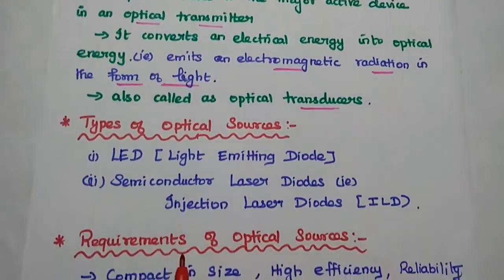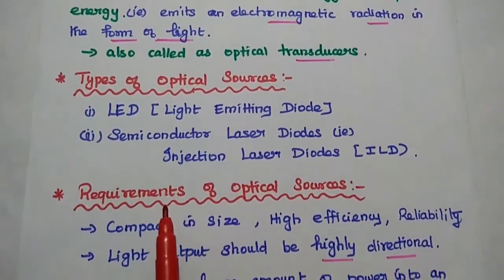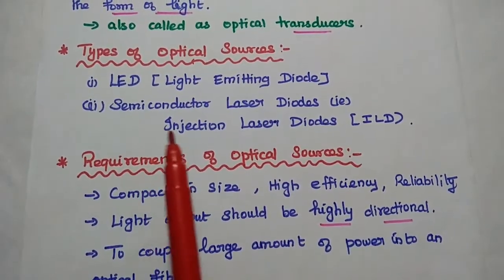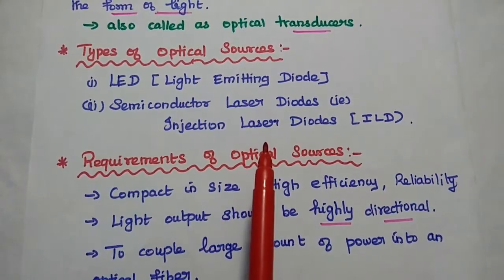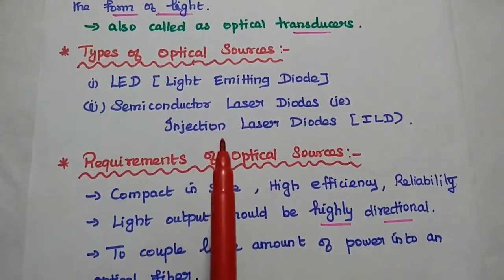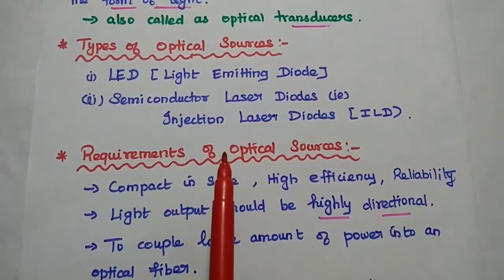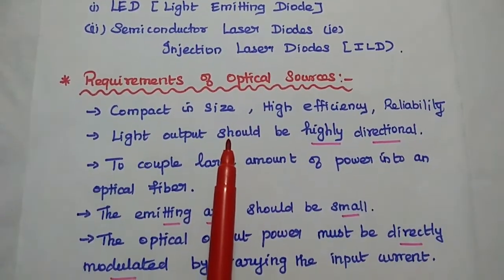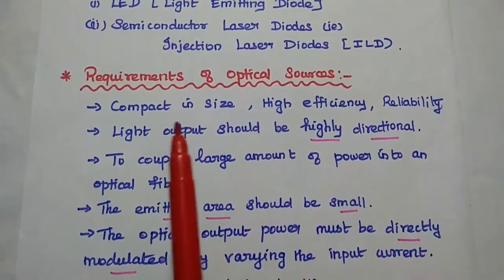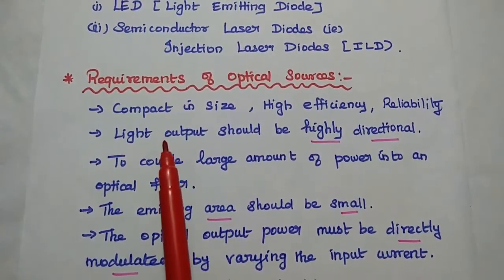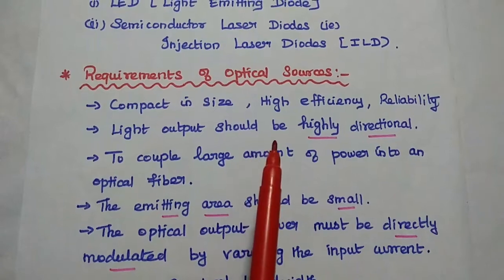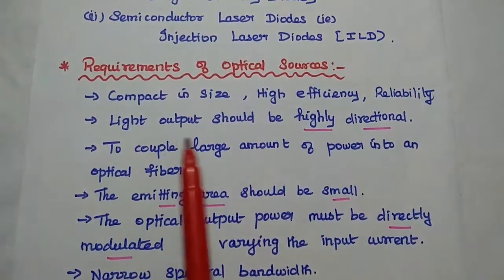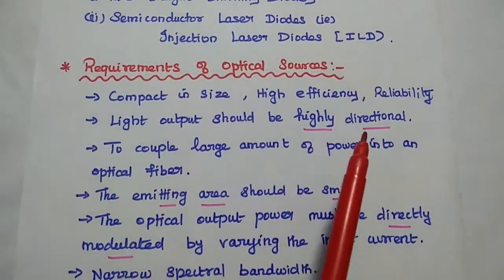There are different types of optical sources available. Light emitting diode, that is LED, and semiconductor laser diodes. These two optical sources are widely used in optical communication. The basic requirements of optical sources are: the optical source should be compact in size, it provides very high efficiency, good reliability.